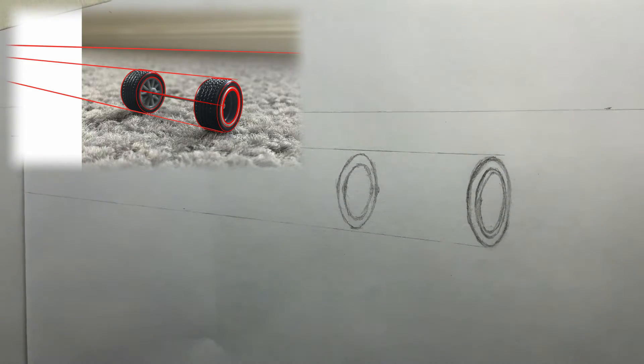Put a dot in the middle of the smallest ellipse on the front wheel and rule the line back to the vanishing point.